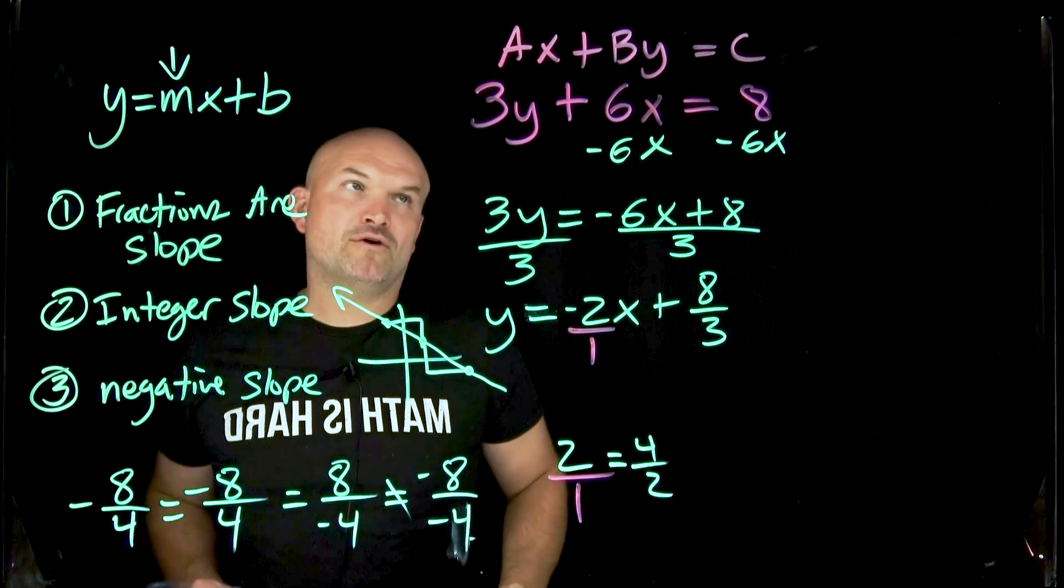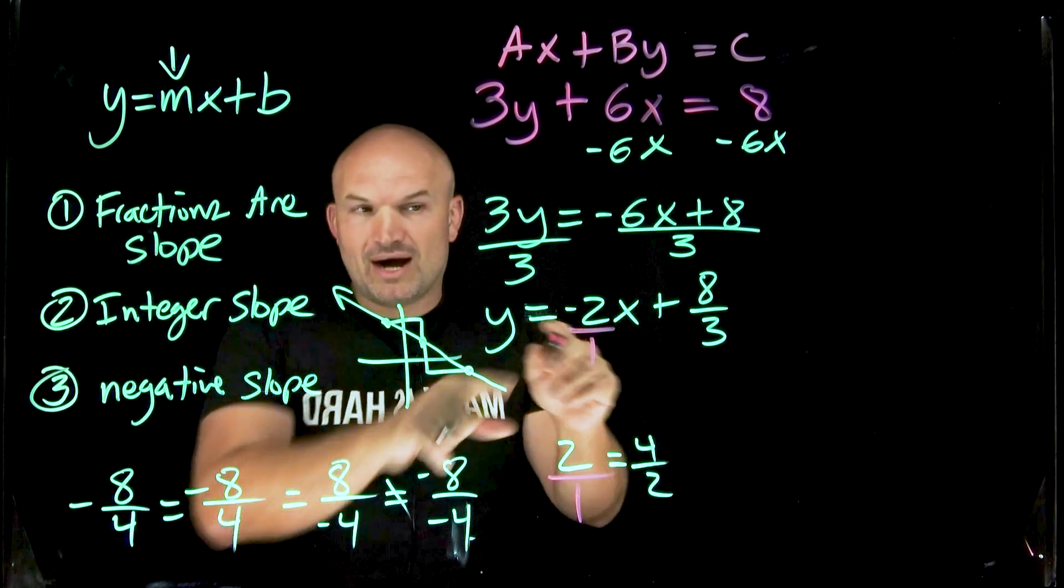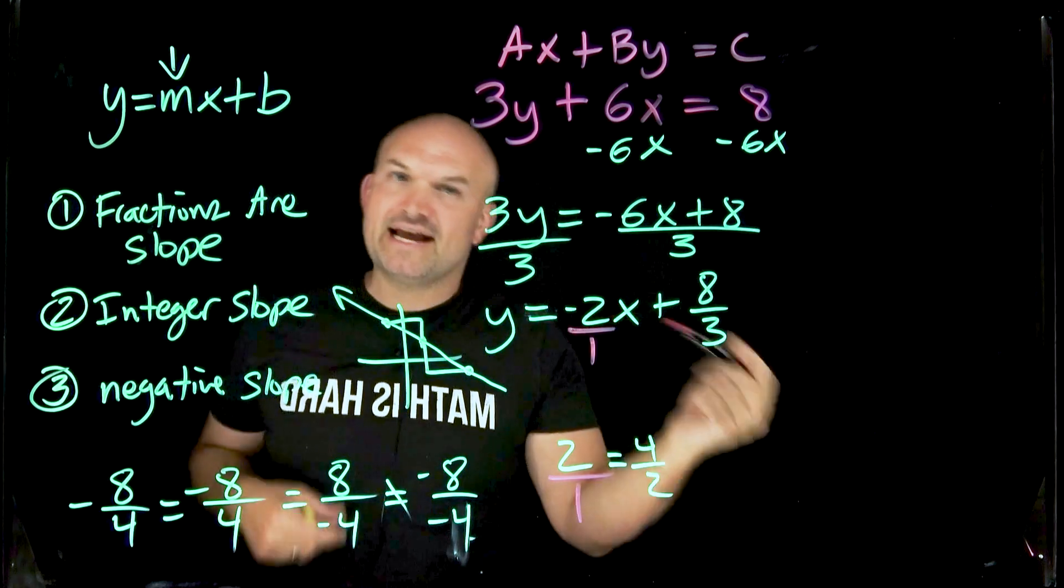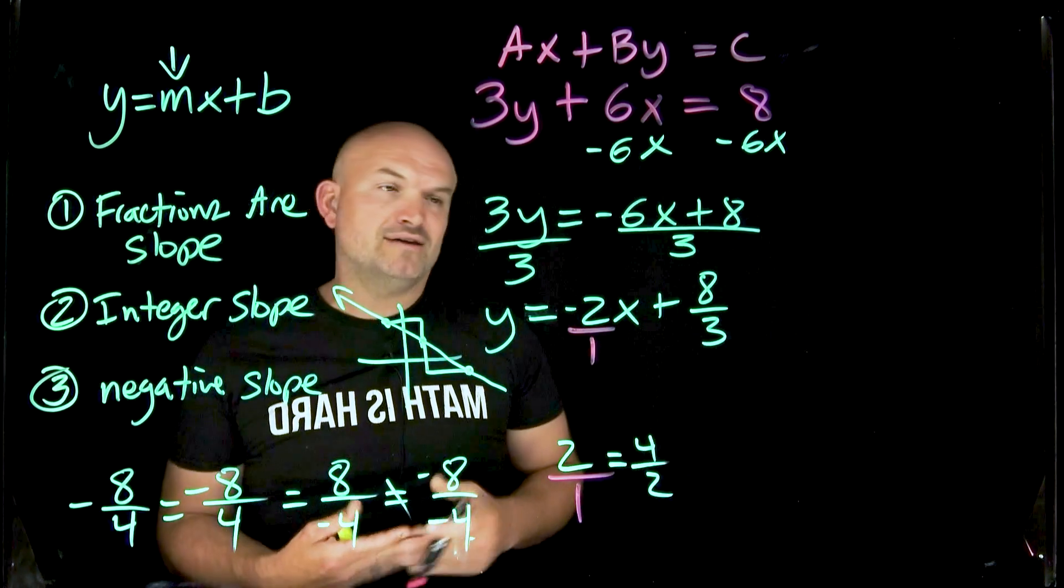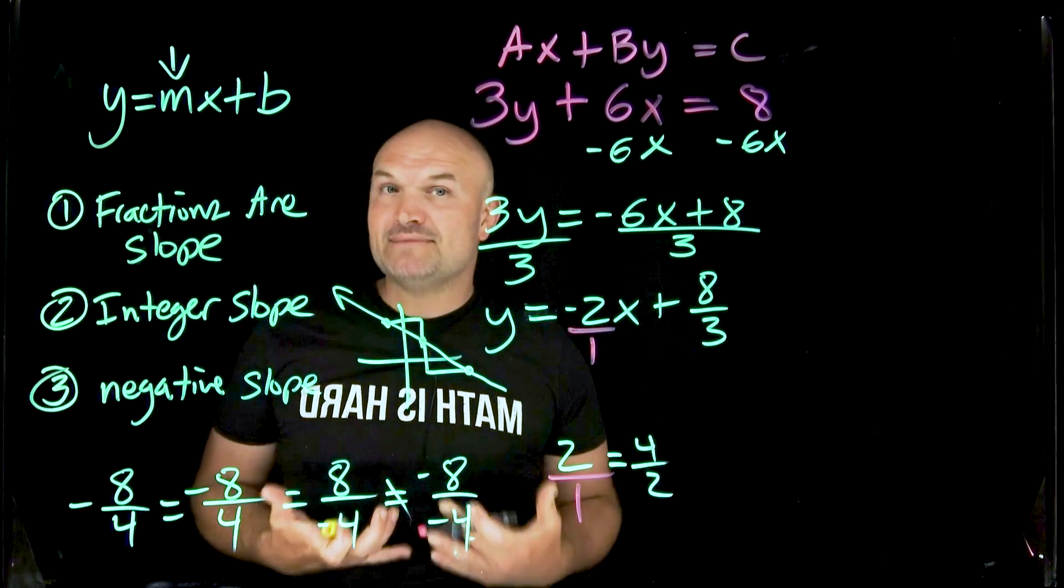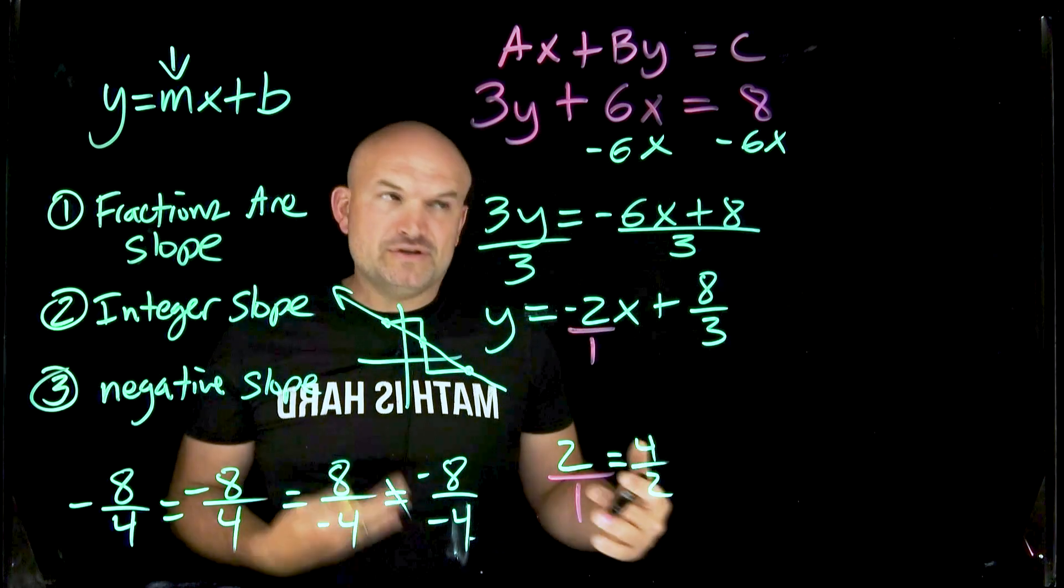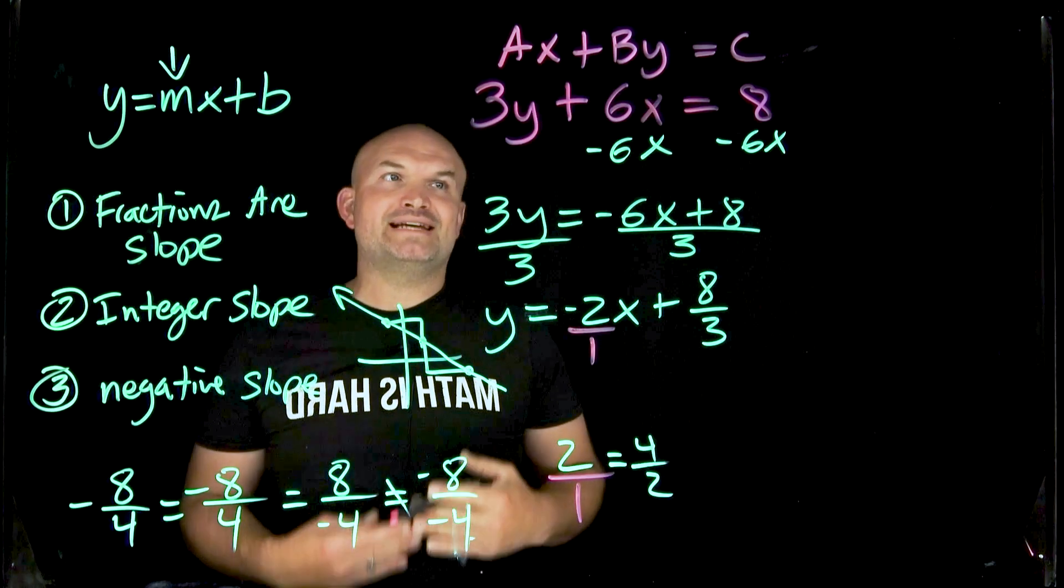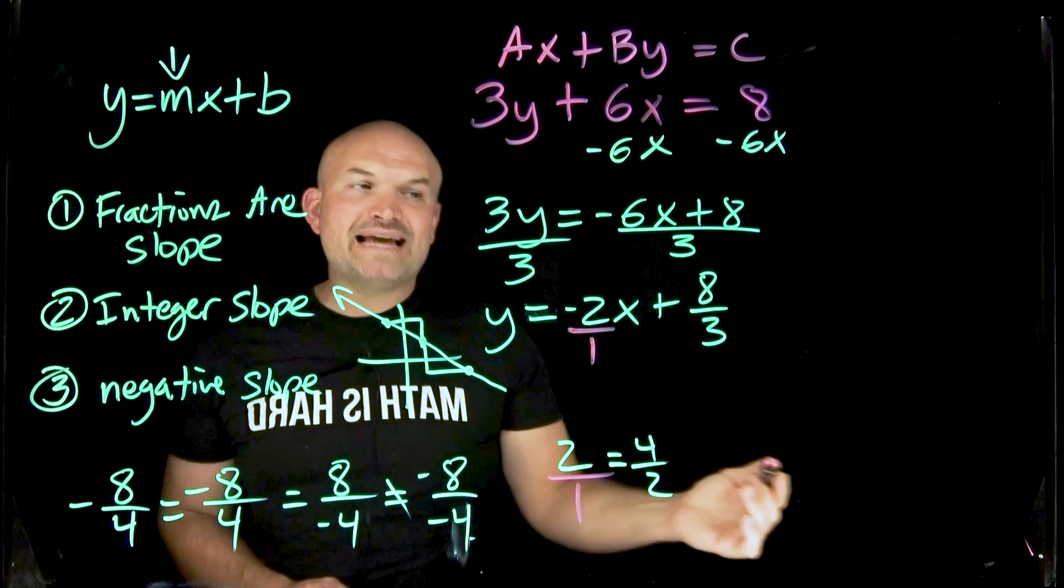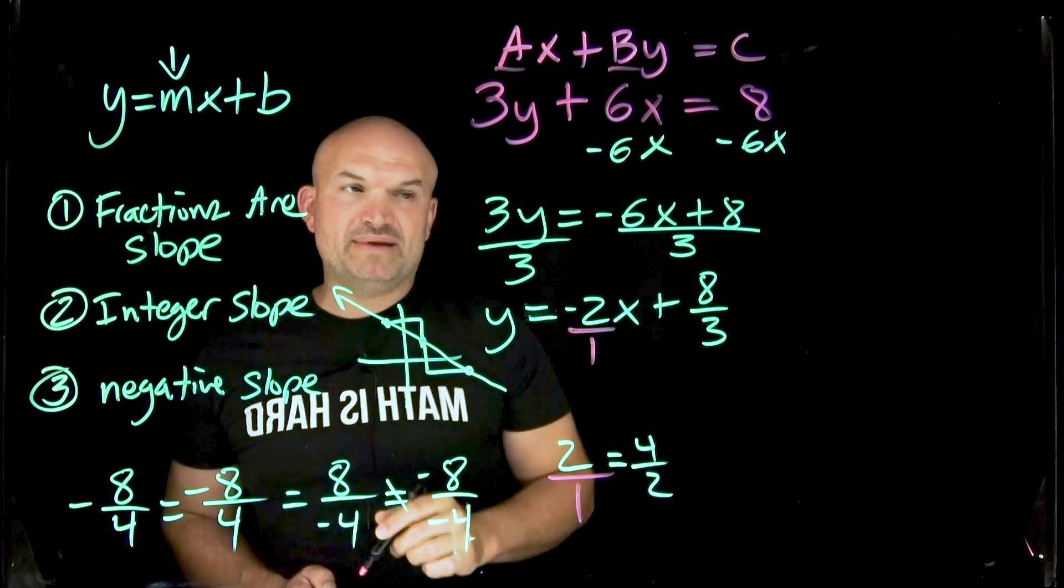But if you have something in standard form and you want to be able to find the slope, yes, could you go ahead and solve for y and then identify and say, oh, it's a negative two if that was a problem? Of course you could. That's really not that hard of a process. But sometimes when you're dealing with fractions or you can make mistake number one, it can get confusing. So when you already have something in standard form, all I want you to be able to identify is just notice there's a relationship to be able to identify our slope given our a and our b.